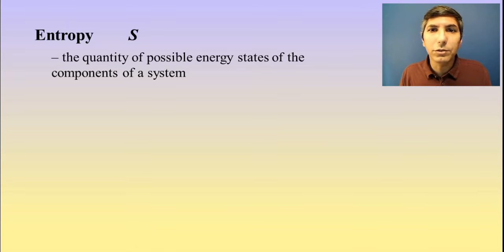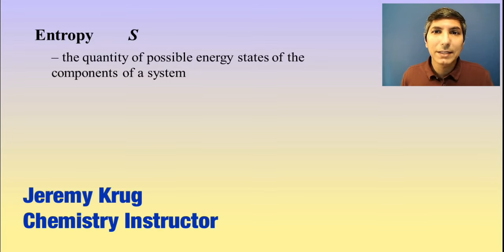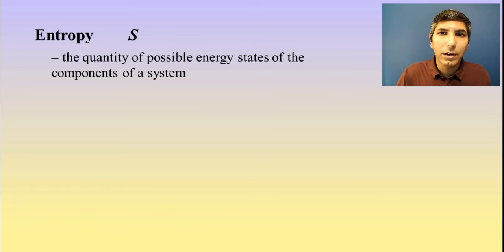Unit 9 in AP chemistry is actually two little units. The first half of this is about the second law of thermodynamics, and the second half is about electrochemistry. So as we start unit 9 section 1, we're talking about entropy and what this is.